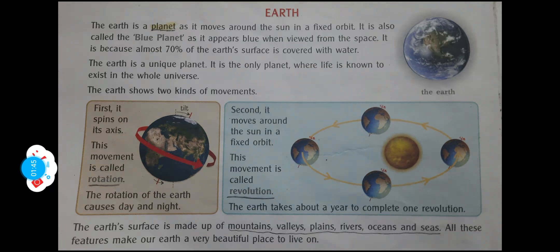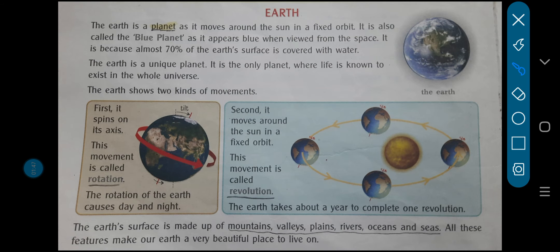Now the earth shows two kinds of movements. The first is rotation and the other is revolution. What do you mean by rotation? You may have studied it before, but let's revise children. The earth spins on its axis — this movement is called rotation. The rotation of the earth causes day and night. Earth pe jo rotation hota hai, uske wajah se hi day and night form hota hai.